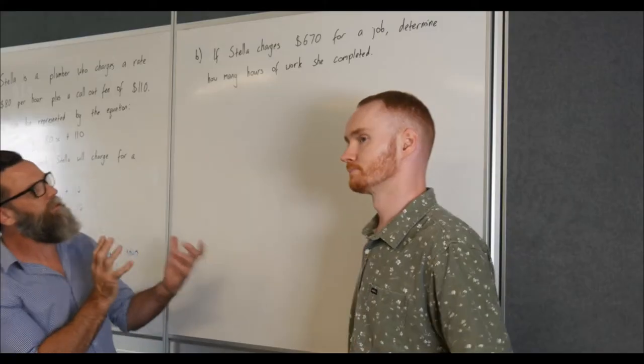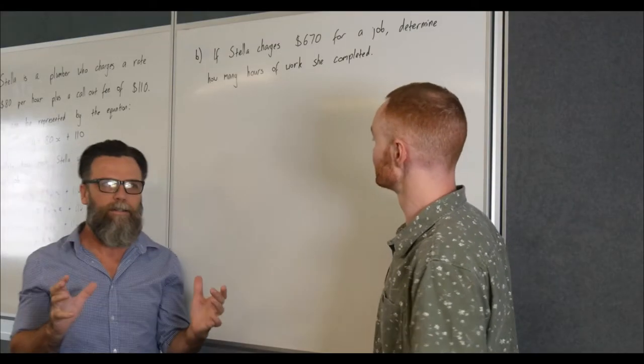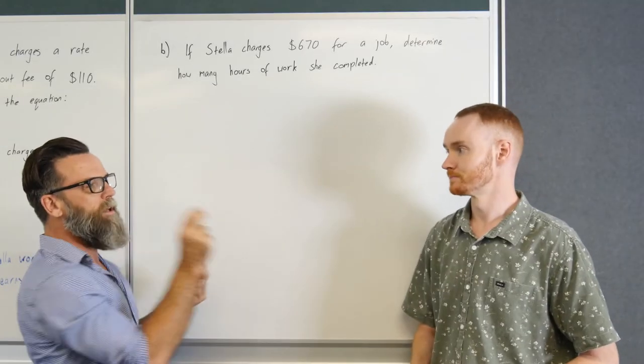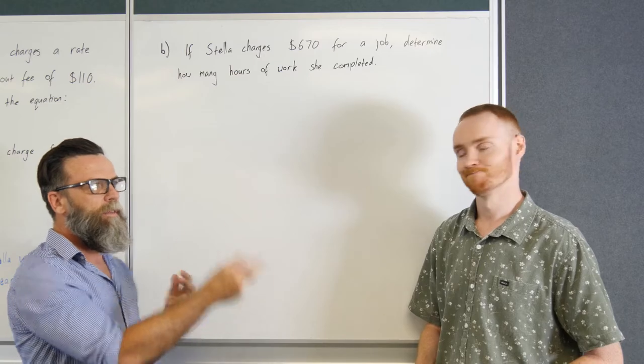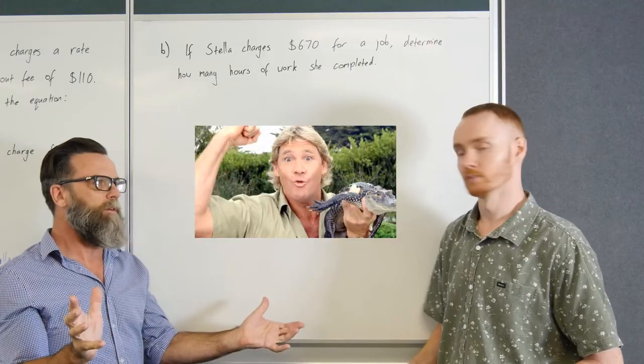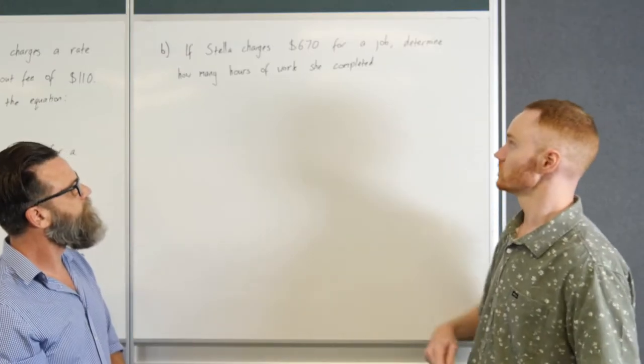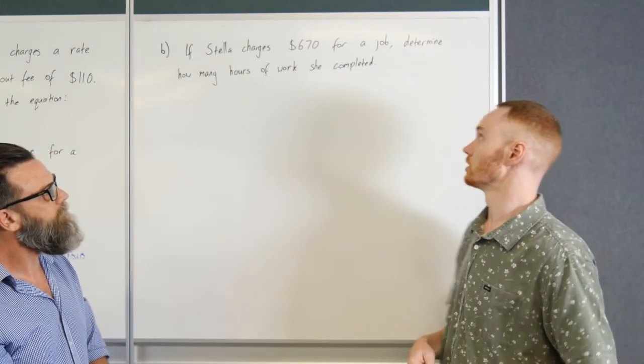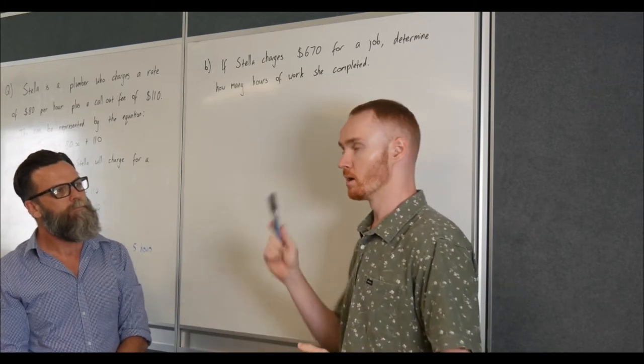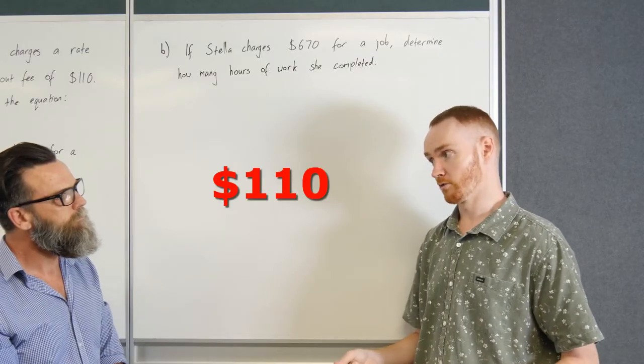So the last piece that we're going to be looking at today is probably the hardest piece. We're talking about a two-step equation and we're not talking about straight substitution. There has to be some algebra involved in this one as well. So really legends only for this one. So we've got if Stella charges $670 for a job determine how many hours of work she completed. But we have to consider that call-out fee.